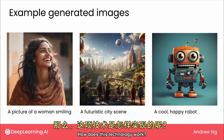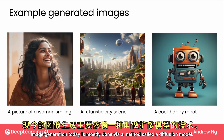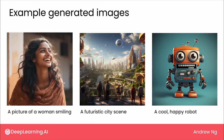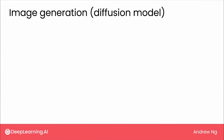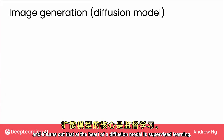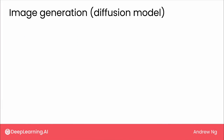How does this technology work? Image generation today is mostly done via a method called a diffusion model. Diffusion models have learned from huge numbers of images found on the internet or elsewhere, and at the heart of a diffusion model is supervised learning.